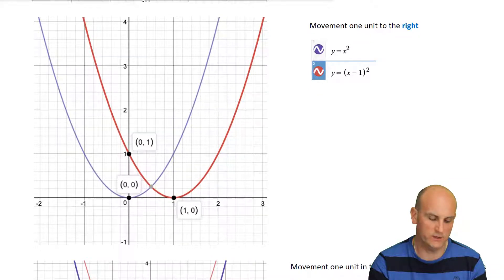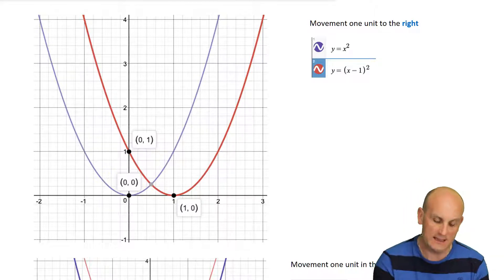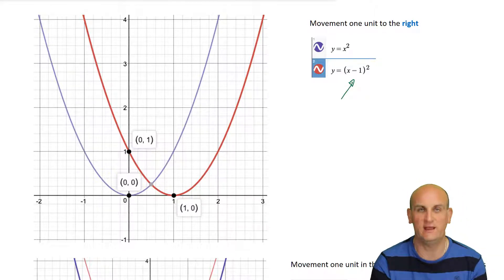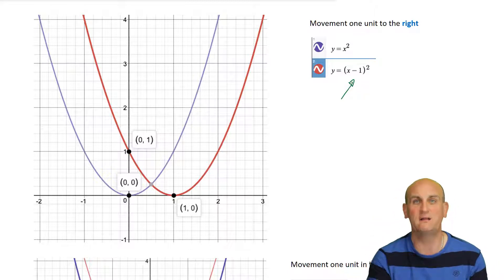If we now contrast that with moving one unit to the right, yes, there is, again, my blue graph is my original y equals x squared. Now, inside my set of brackets, I've got y equals x minus 1. And again, you think that minus 1 would move it to the left? It doesn't. It moves it to the right. Again, counterintuitive, but very much what methods is all about.